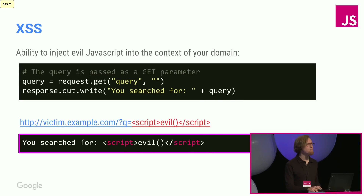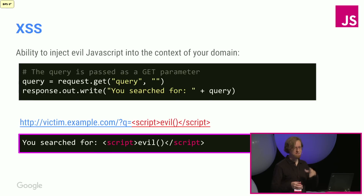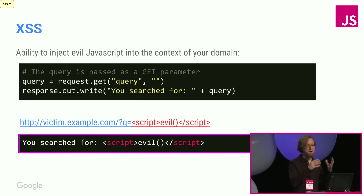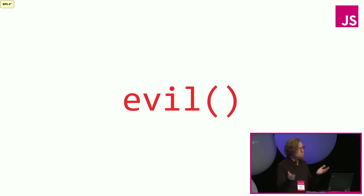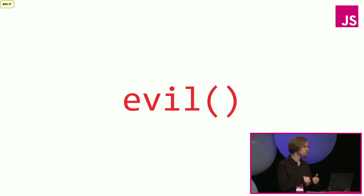If you were at Anand's talk, you already know what cross-site scripting is, so this is just a quick reminder. Traditionally, XSS bugs got introduced when you had an HTTP parameter that you output to your page without any escaping. An evil website can point to that URL and make your user execute an evil script. One example Anand showed is that if someone gave webcam permissions to your website, an attacker can transparently enable it and spy on your users.